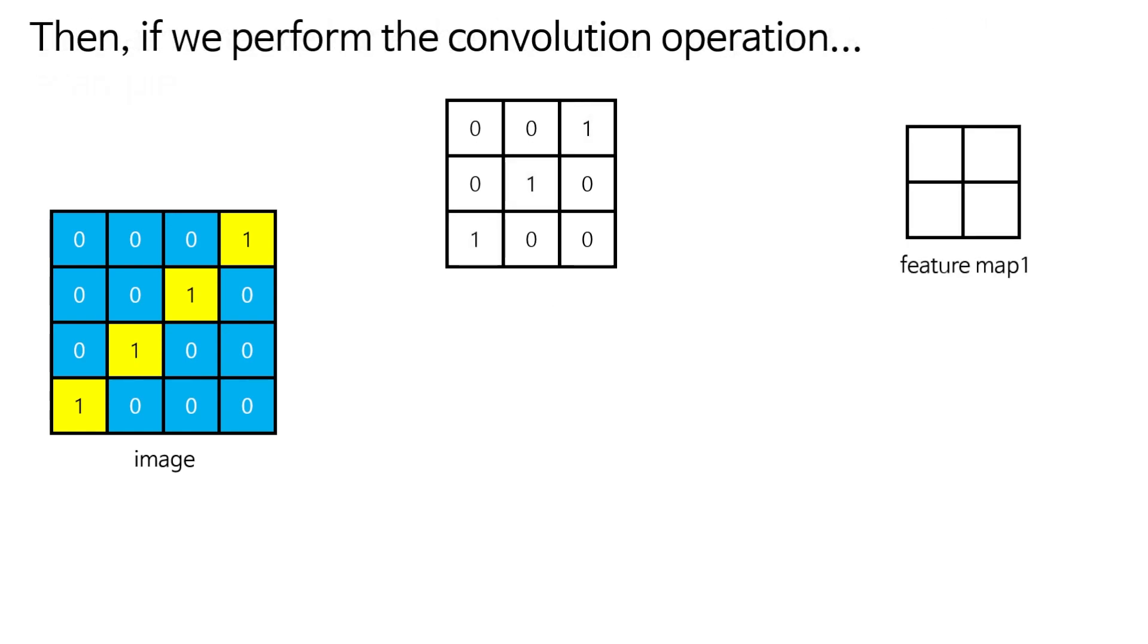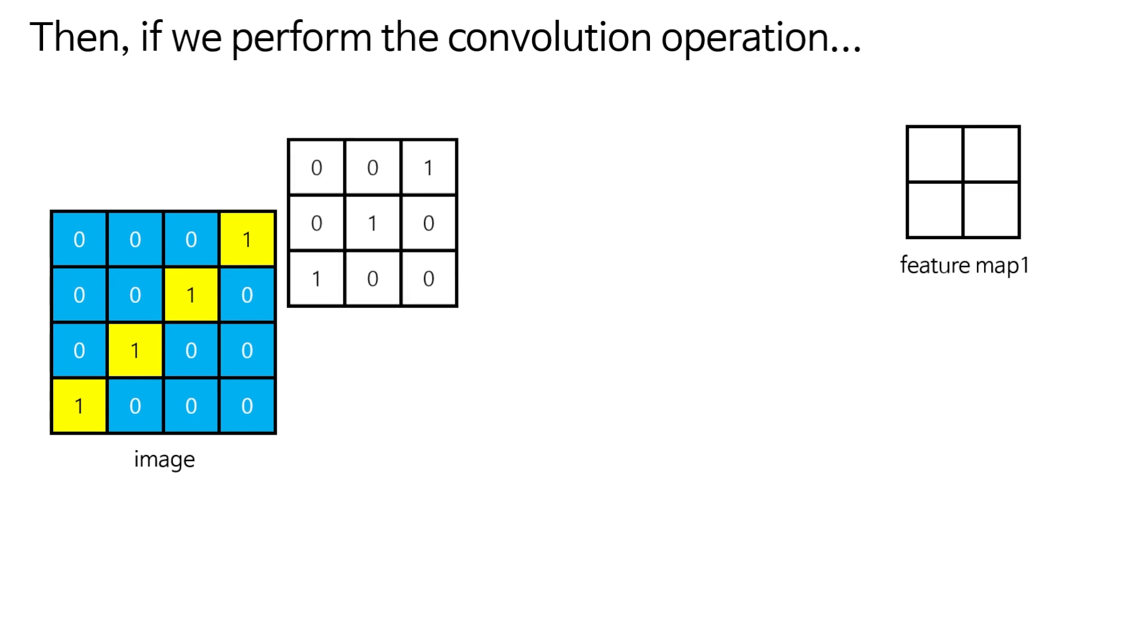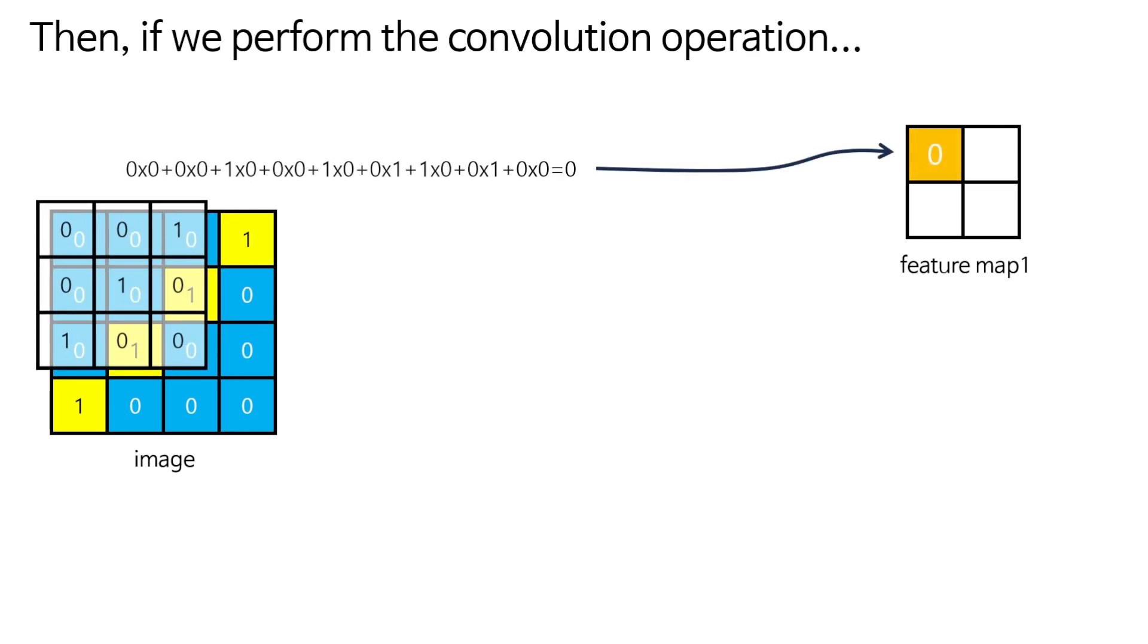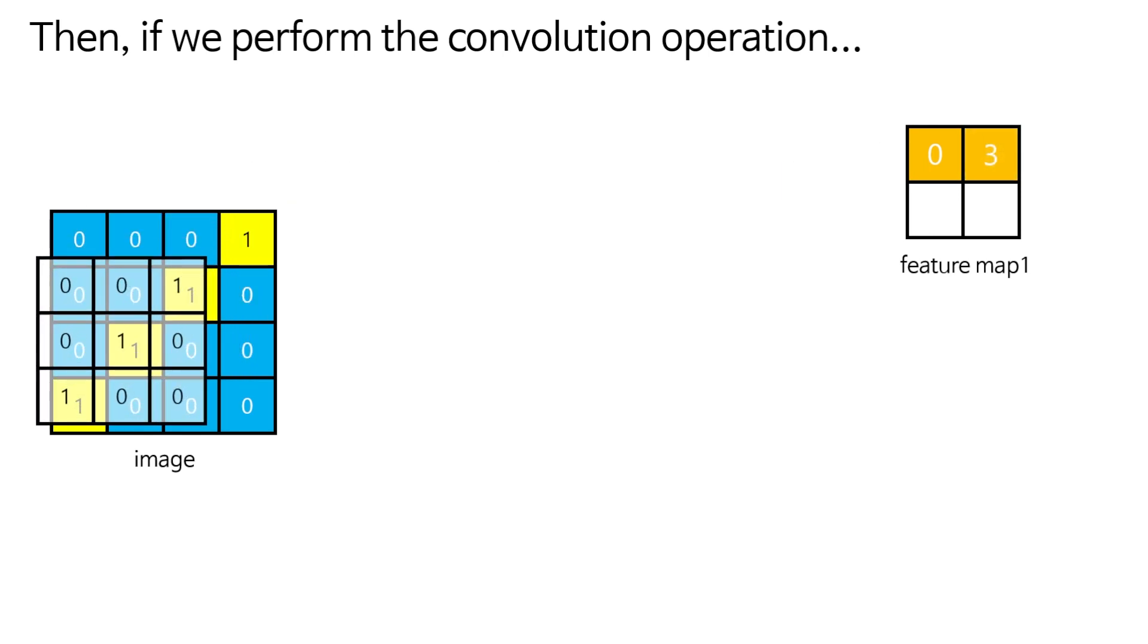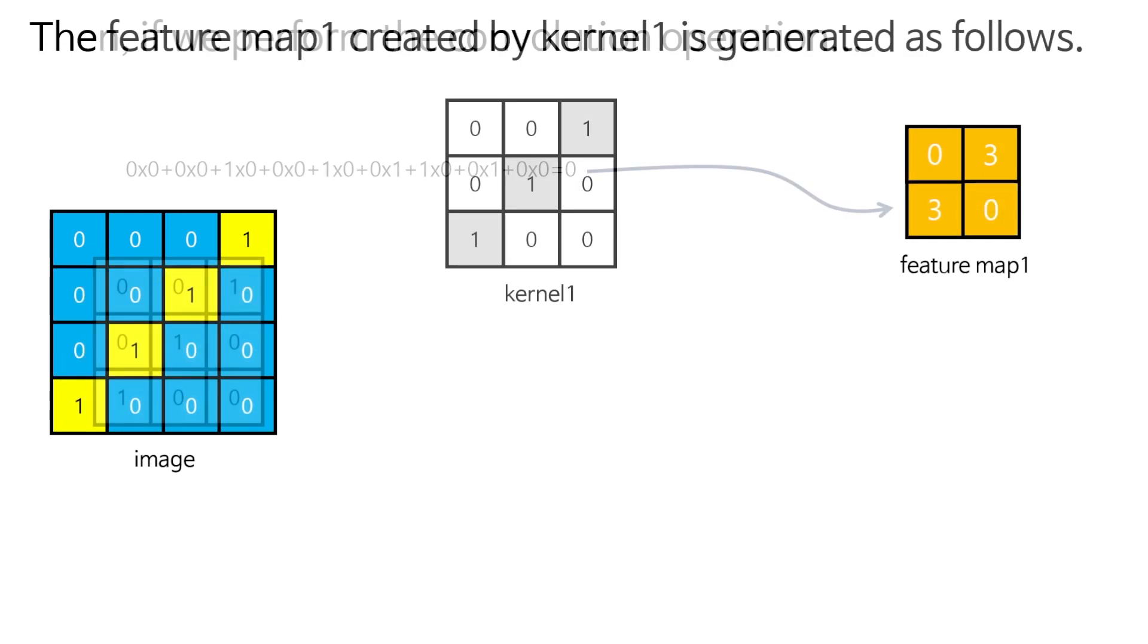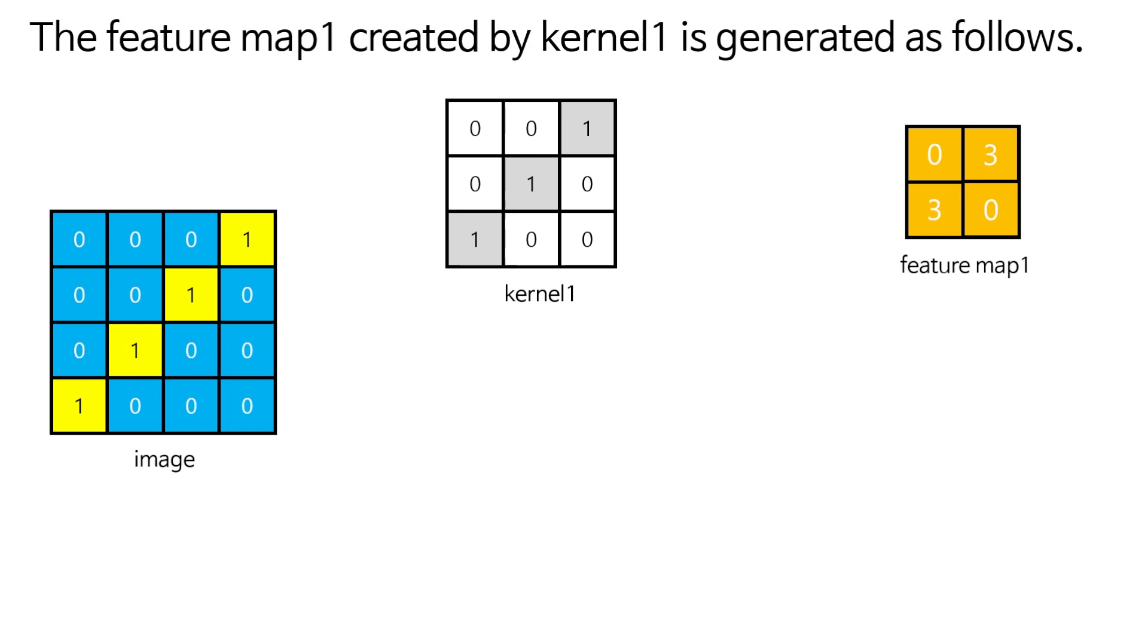Then, if we perform the convolution operation, the feature map 1 created by kernel 1 is generated as follows.